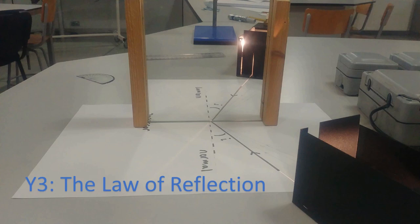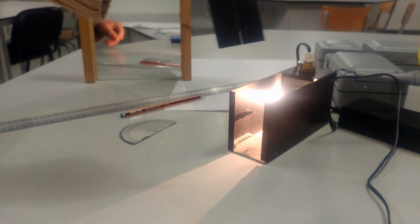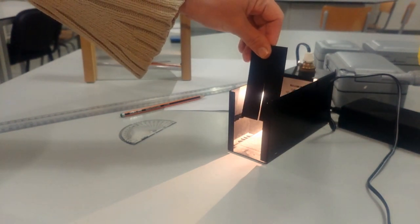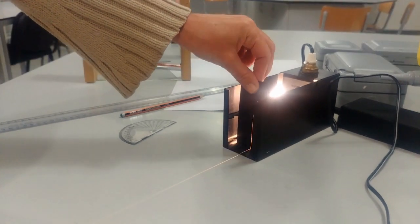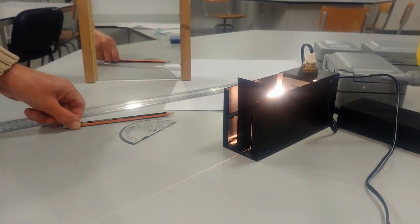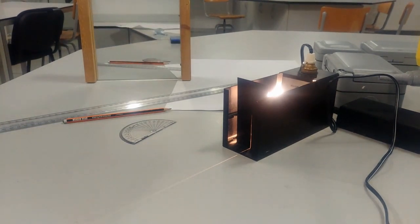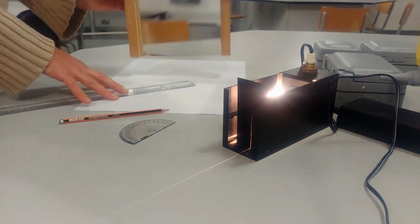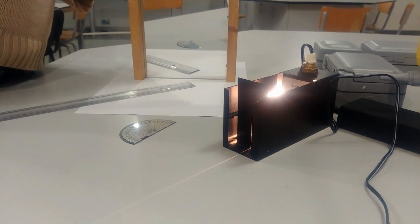Investigating the law of reflection — Year 3, Investigation 2: Light. For this investigation you need a ray box with a single slit, a mirror, a protractor, a ruler, paper, and a sharp pencil. You use the ray box to produce a single ray, and that ray can be shown and seen on the piece of paper.